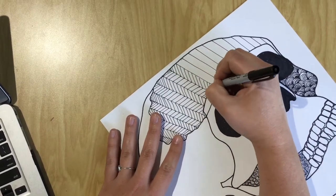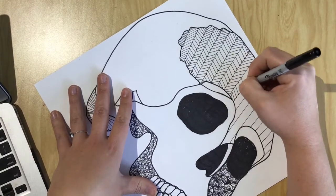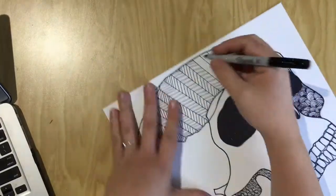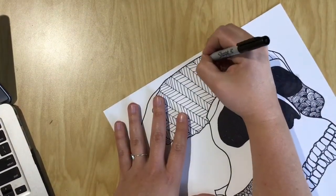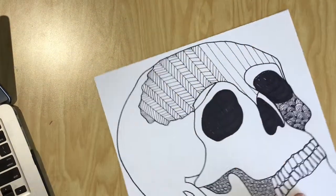Some people find that Zentangles are very relaxing and they help you kind of zone out and so when your brain is going a million miles an hour and you need to just chill out for a minute, a lot of people like to turn on music and work on these patterns because there's something relaxing about knowing what to do and just having to repeat that over and over and over again.